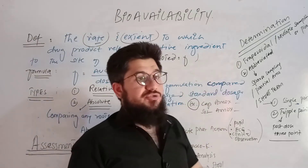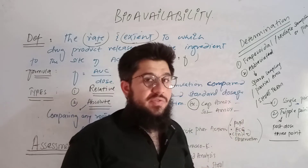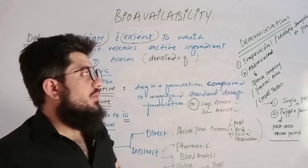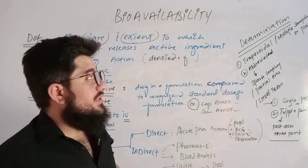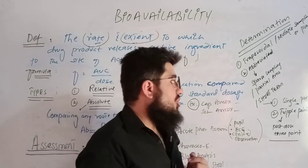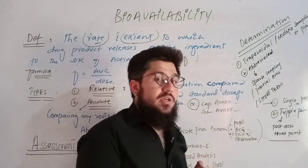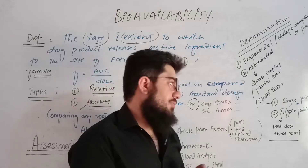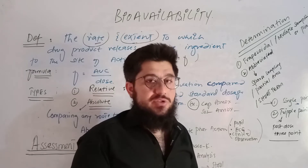Then we'll talk about determination. Here we'll discuss a number of points, such as the trapezoidal method, multiple sampling method, planimetric method, abbreviated method, sparse sampling, partial area, short term, single point, triple point, and post-dose three-point method. We'll talk about all these terms in a very simple and easy way.